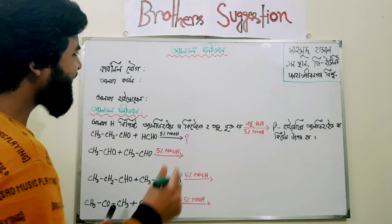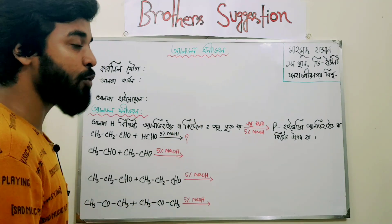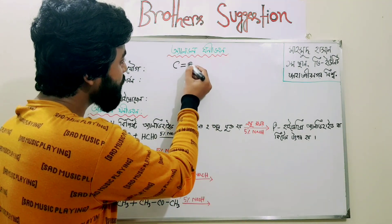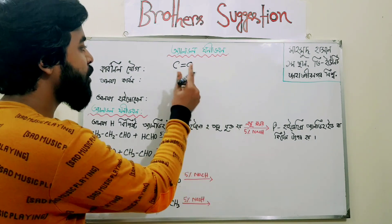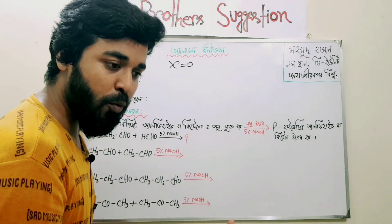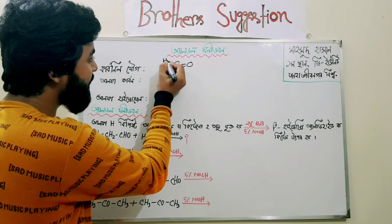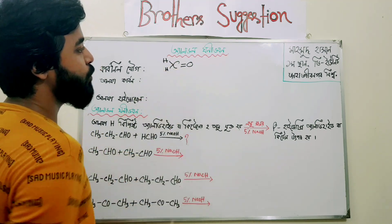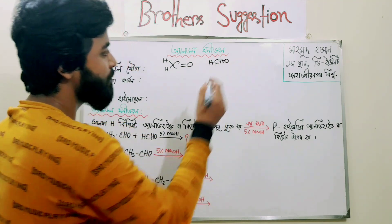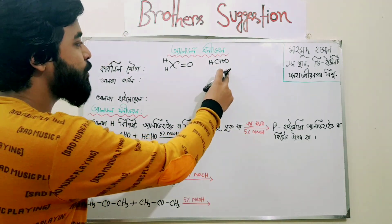Let's start with carbonyl. What is carbonyl? Carbonyl is the same as carbonyl. In the last two of them, carbonyl is the same as carbonyl. It is the same as carbonyl, and if carbon is the same as carbonyl, it is the same as carbonyl.